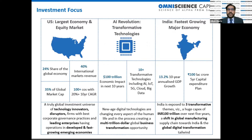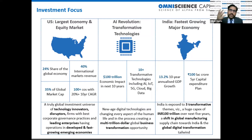These are our focus markets. The US is one of the largest economies and equity markets in the world, with many globally important companies listed there. Second is the AI revolution — we focus on transformative technologies because a good player goes where the ball is, while a great player goes where the ball is going to be. You need direct exposure to transformative technologies because they're disrupting traditional sectors. Third is India, one of the fastest-growing major economies, but today we'll focus on the US markets.